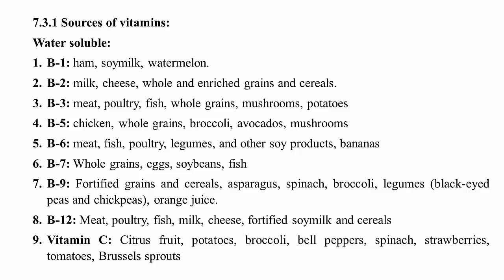The sources of vitamin B6 include meat, fish, poultry, legumes and soy products, and we can also get vitamin B6 from bananas. If you are facing a deficiency of vitamin B6, consuming bananas in large quantity is recommended. For vitamin B7, the sources include whole grains, eggs, soybeans and different types of fish.